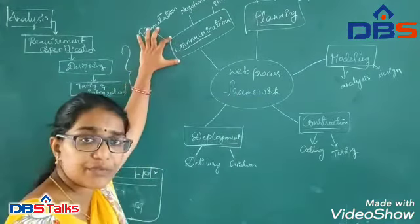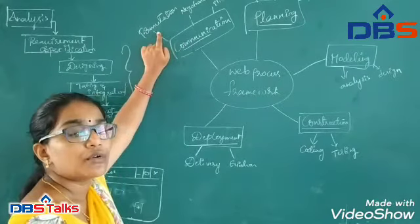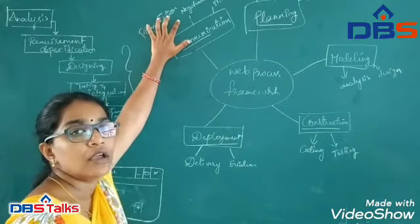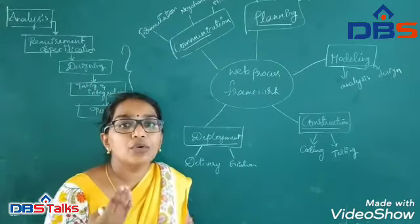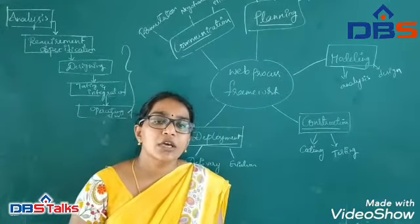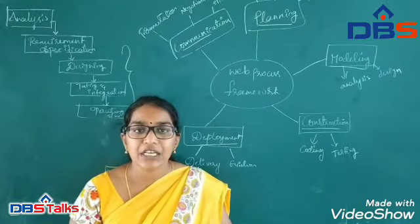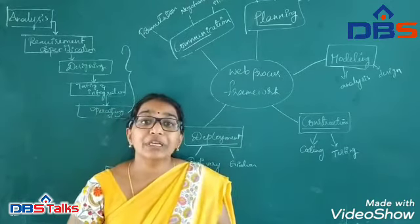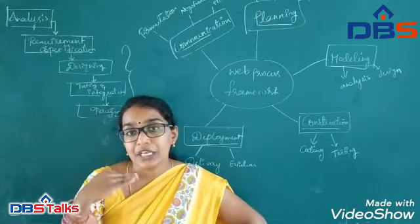The first phase is communication. In this communication phase, the first task is formation — we form whatever things we are doing. Next is negotiation — we negotiate and eliminate useless requirements. Whatever requirements are needed, we elect those. Whenever developing a particular application, first you communicate with the customer. The software developer has to reach the requirements of the customer.